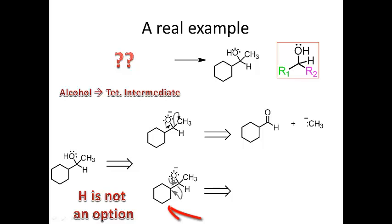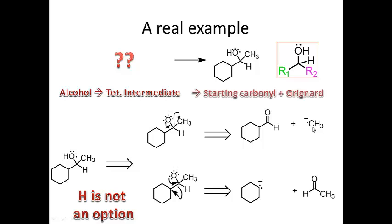If I eliminate the cyclohexane ring, I reform the pi bond, kick the pair of electrons to that carbon, and I get an aldehyde with the cyclohexane ring as a carbanion. To form the Grignard: if CH3 is the leaving group, I add MgBr to get CH3-MgBr as my Grignard reagent. If the ring is the leaving group, I add MgBr to that carbanion to get the cyclohexyl Grignard.